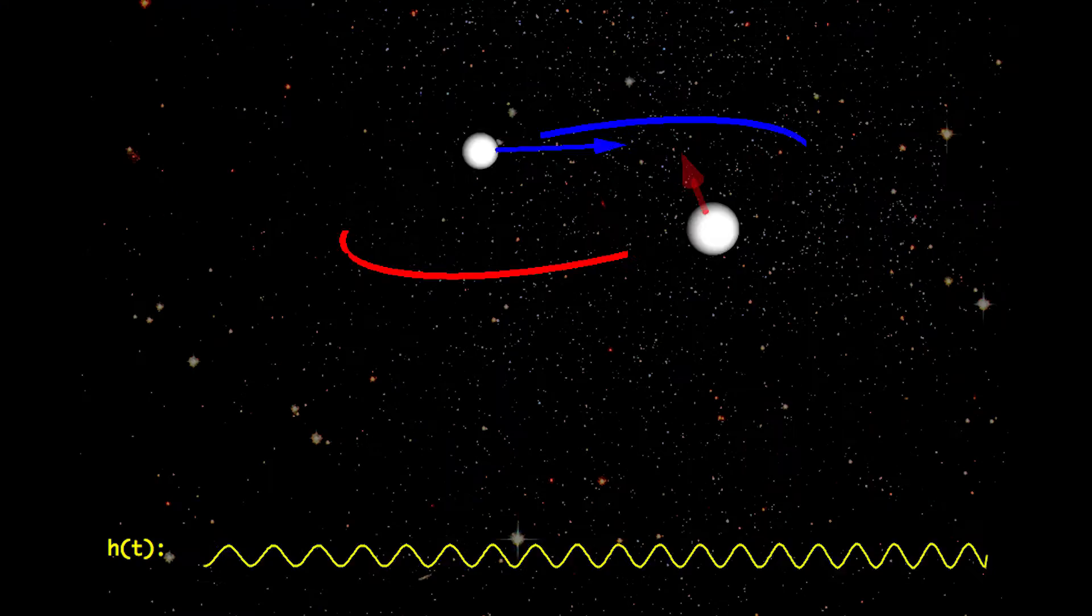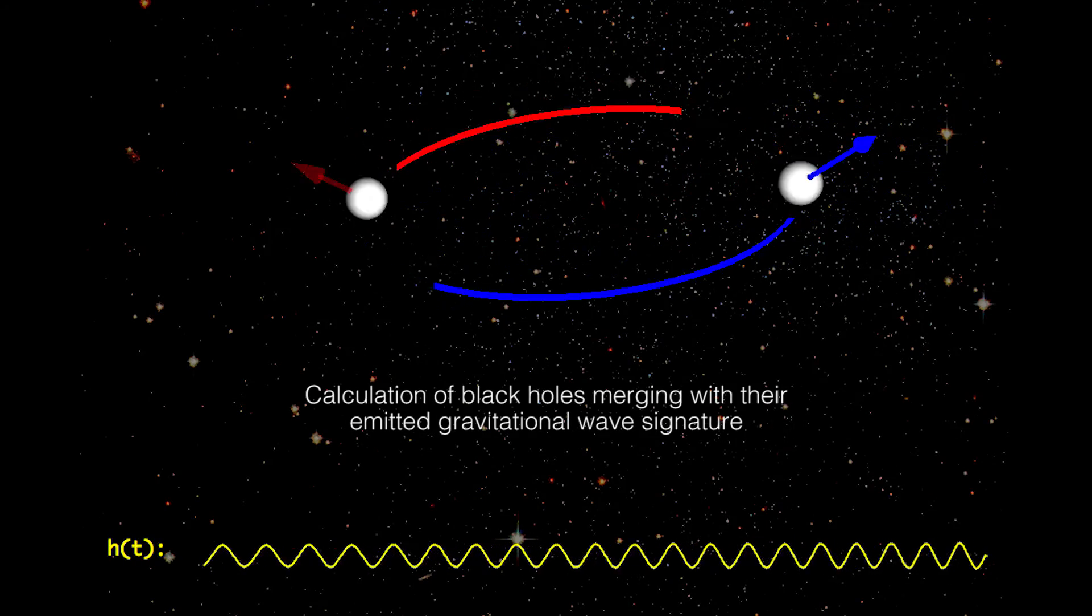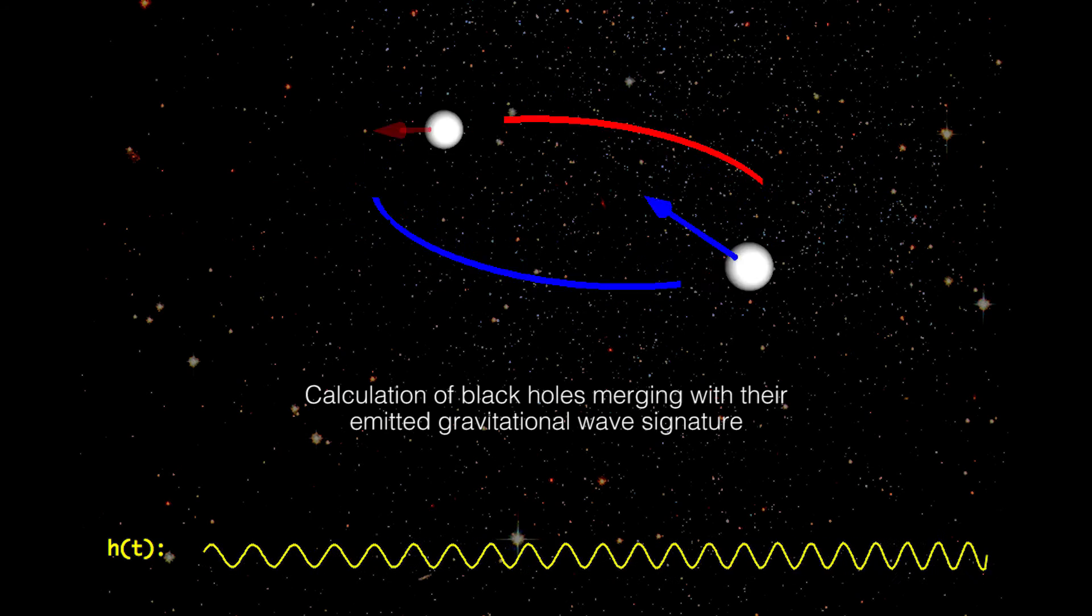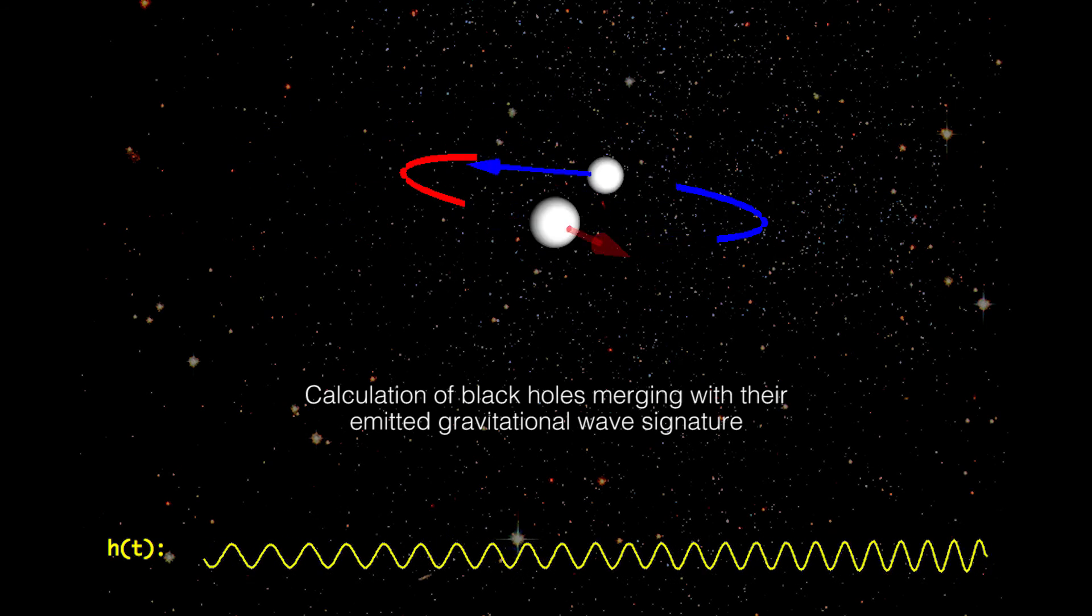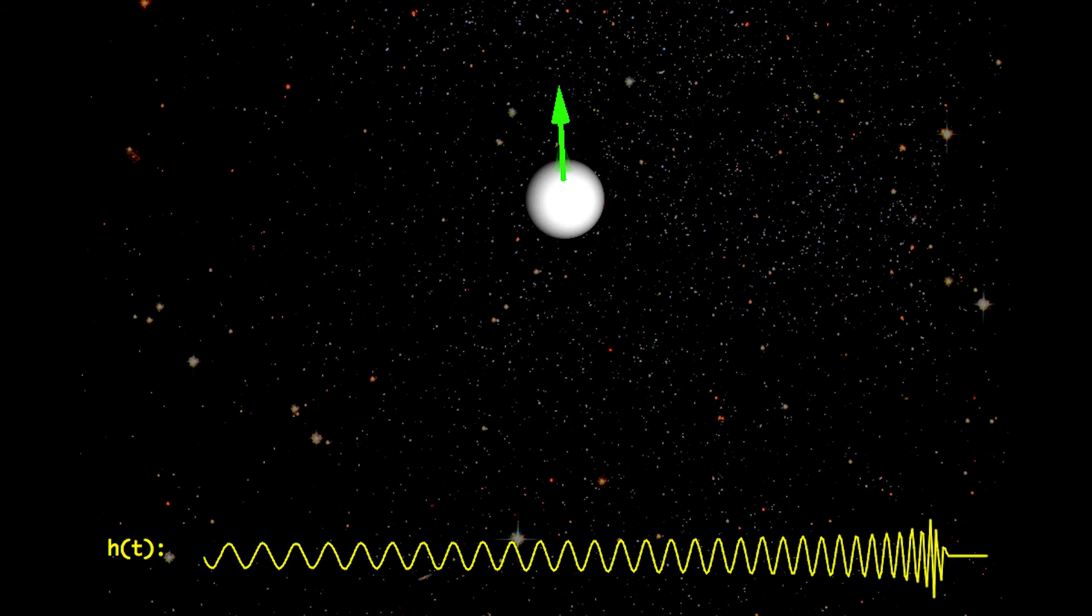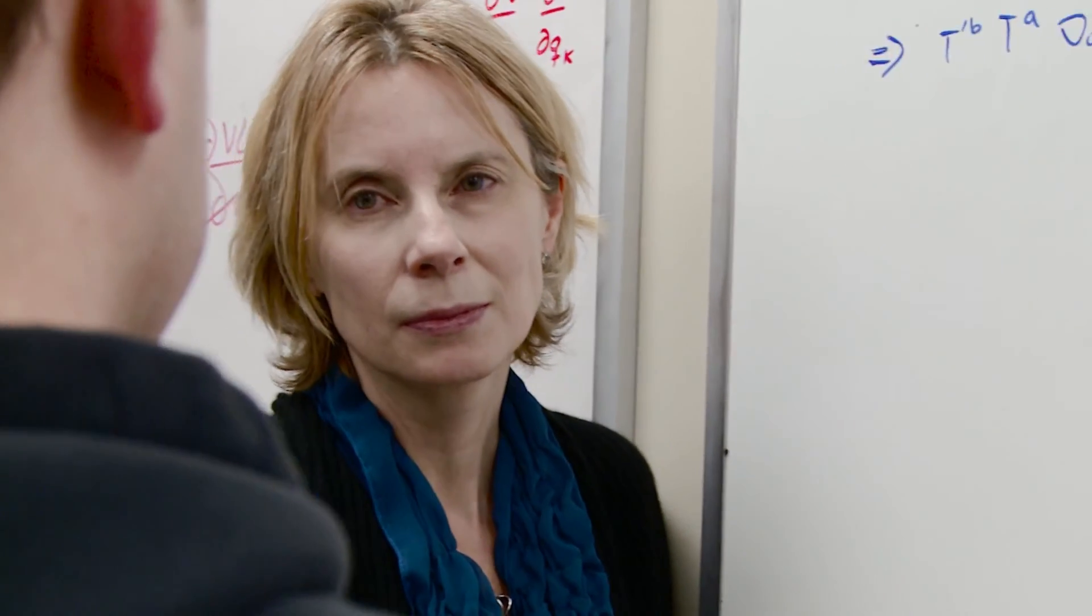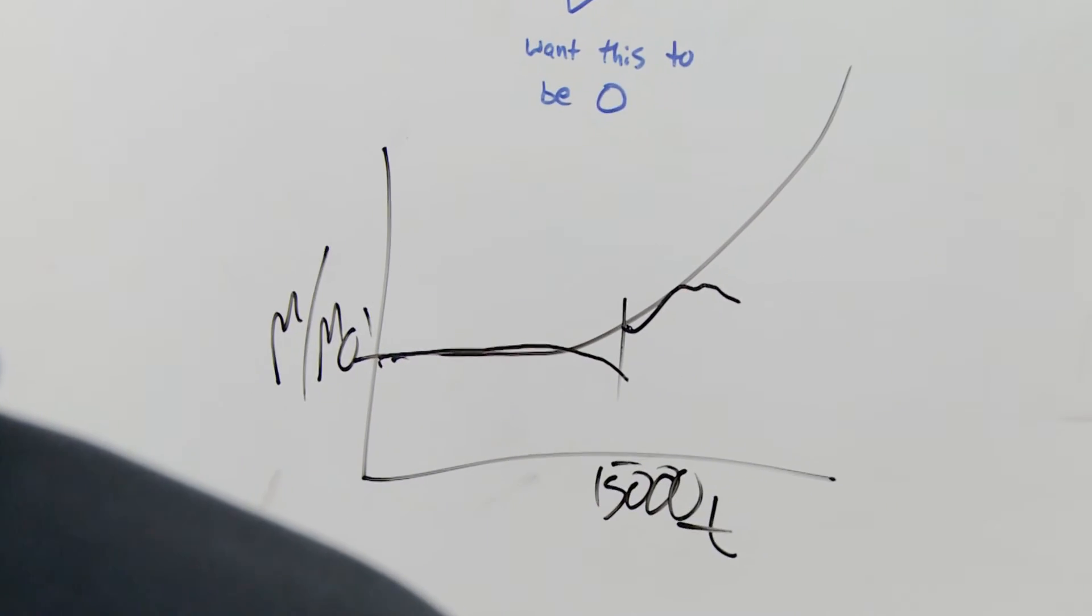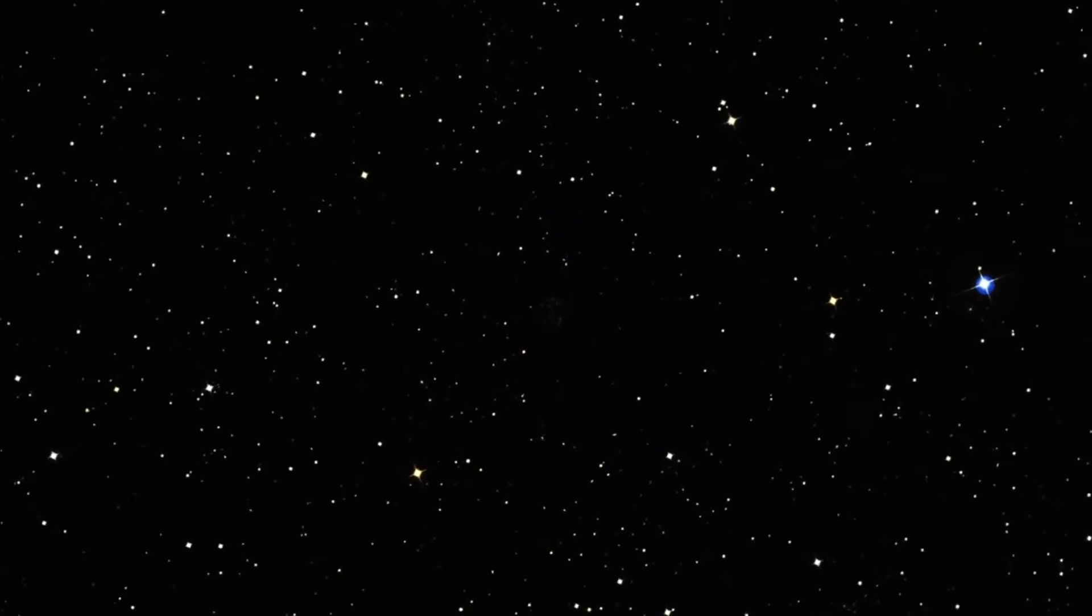The group here is one of the world leader groups in the field of numerical relativity. Ten years ago, we solved for the first time the equation of general relativity that describes how two black holes collide and merge in strong field gravity. It was called a breakthrough in numerical relativity. Finally, we obtained a way of solving this problem.